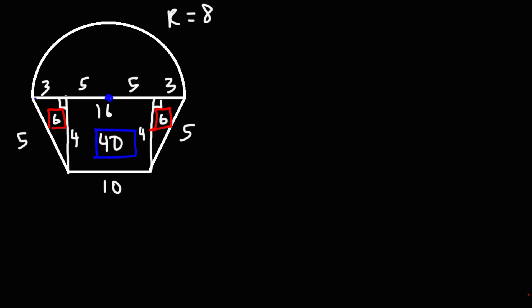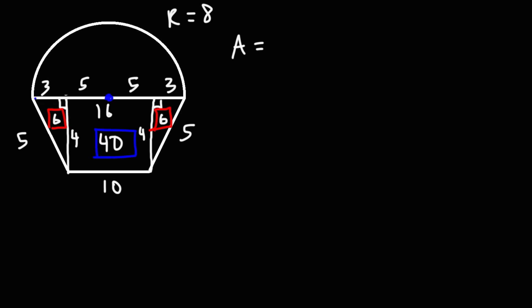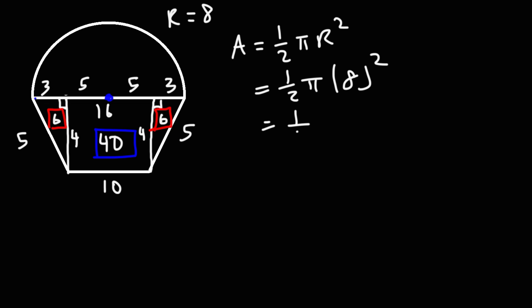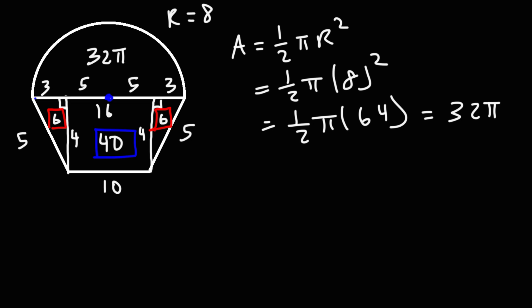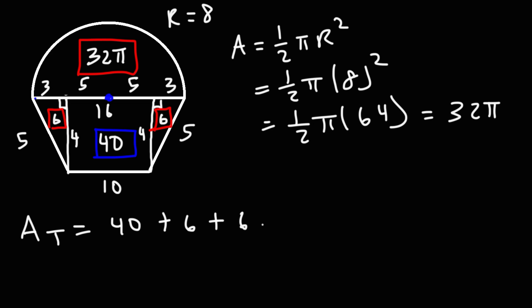Now let's focus on the semicircle. The area is 1/2 pi r squared, and r is 8. 8 squared is 64, and half of 64 is 32. So the area of the semicircle is 32 pi. The total area is 40 plus 6 plus 6 plus 32 pi. 6 plus 6 is 12, plus 40 is 52. So we get 52 plus 32 pi square units.